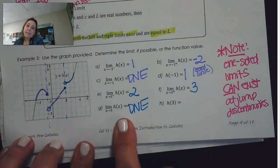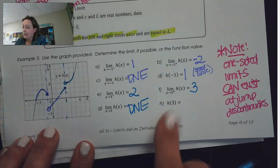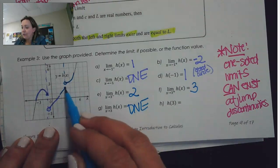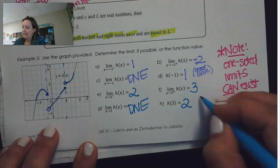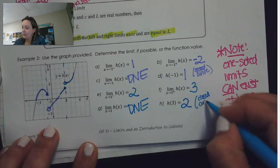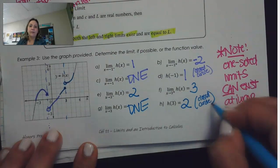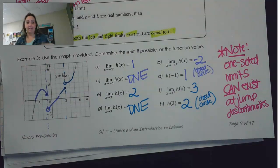Just because the limit doesn't exist doesn't mean that H of 3 doesn't exist. We do have a closed circle when x equals 3 — we can see that our value is 2. So that's the scoop on using graphs to look at one-sided limits.